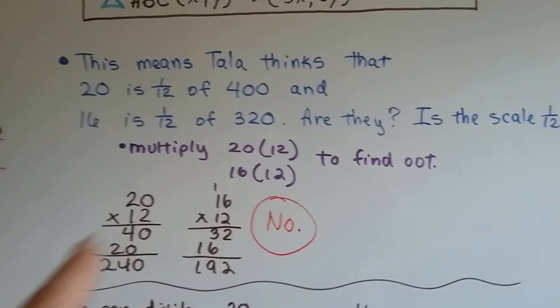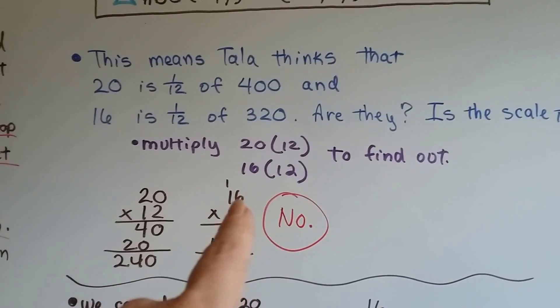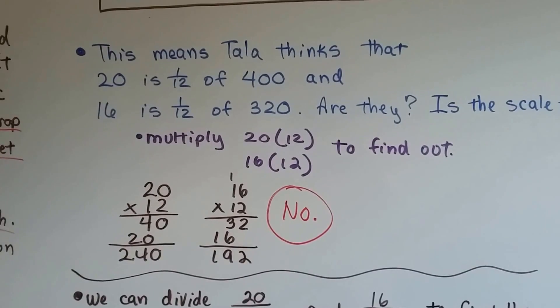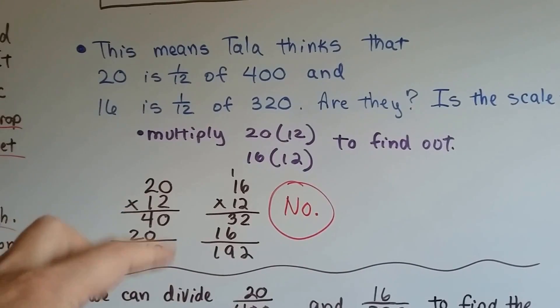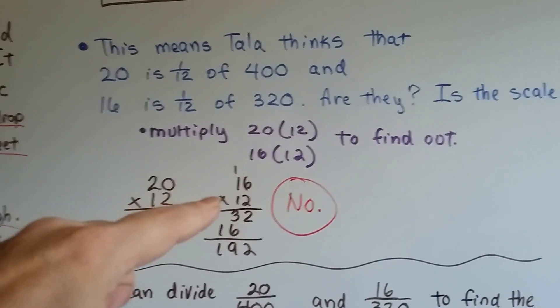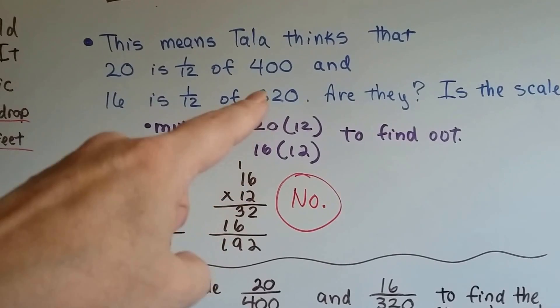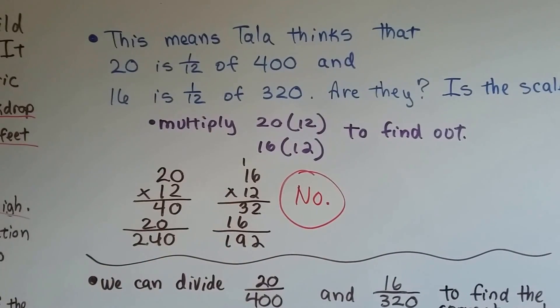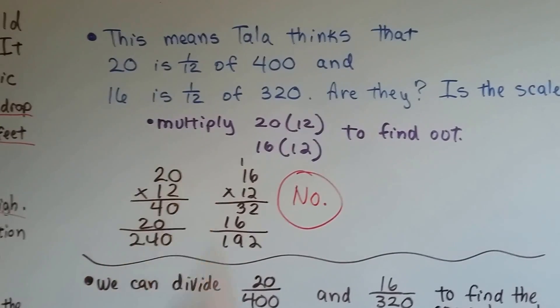Is the scale 1/12th? All we have to do is multiply 20 by 12 and 16 by 12 to find out. 20 times 12 is 240. That's not 400. 16 times 12 is 192. That's not 320. We need it to be a different scale.